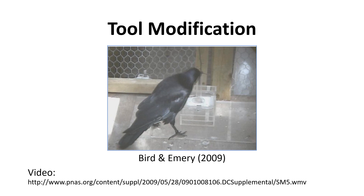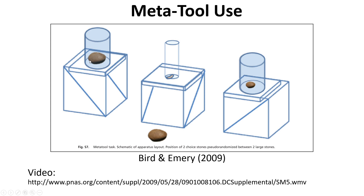The next part is tool modification. Instead of giving crows a ready-made tool, researchers gave them items not quite suited to the task — for example, a stick with lots of branches that wouldn't fit into the tube. They found that these crows would actually break off the side branches to turn it into one long straight piece of wood they could then use for the task.